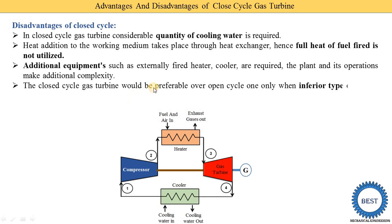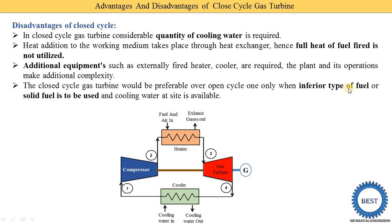The closed cycle gas turbine will be preferable over an open cycle only when an inferior type of fuel or solid fuel is to be used and cooling water is available at the site. We need three conditions to favor using the closed cycle: inferior type of fuel, solid fuel availability, and cooling water availability. When all these conditions are met, a closed cycle gas turbine power plant can be used.